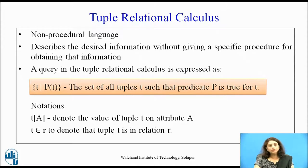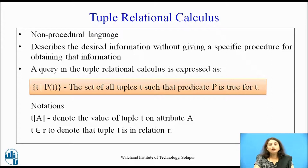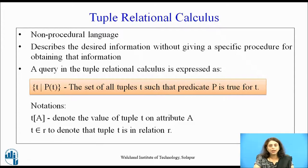Before, we have seen relational algebra where we write a sequence of procedures used for generating the answer. Now in tuple relational calculus it is a non-procedural language. It describes the desired information without giving a specific procedure for obtaining that information. A query in tuple relational calculus is in the form of {t | p(t)}, which gives the set of all tuples t such that predicate p is true for that tuple t.